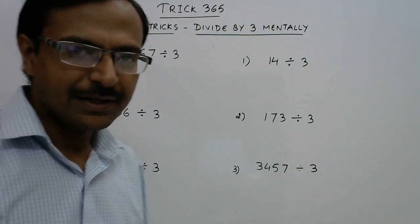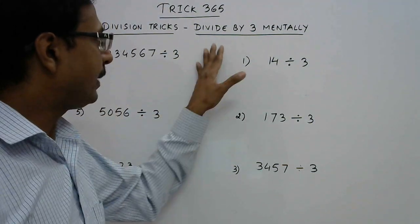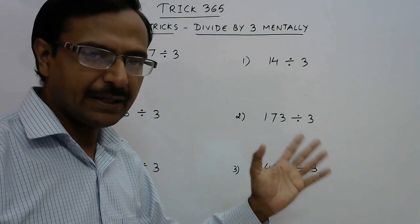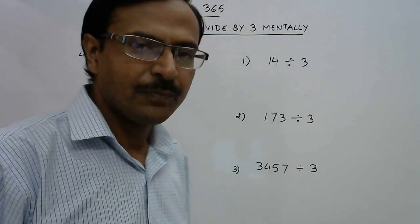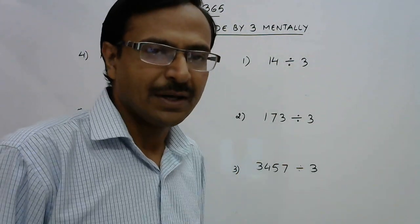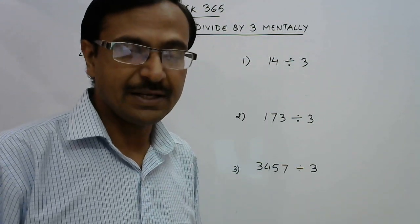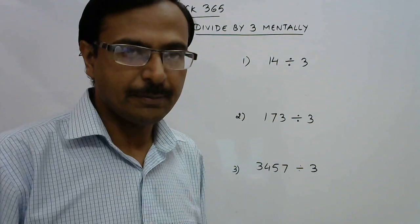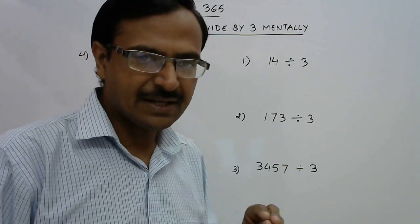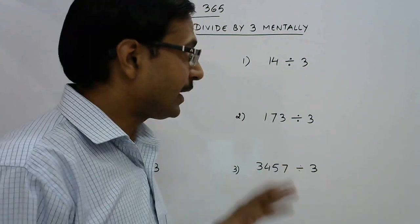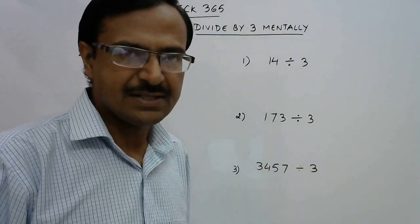Hello dear students, yet another amazing division trick. This time we will try and divide numbers by three mentally. I have written some questions here and we will be dividing them mentally in decimals. Remember, whenever we divide a number by three, if the number is not exactly divisible by three, it is a non-terminating decimal. If you have basic understanding of what the remainder can be when we divide a number by three, then things will be very easy.